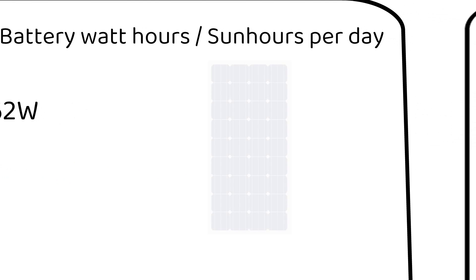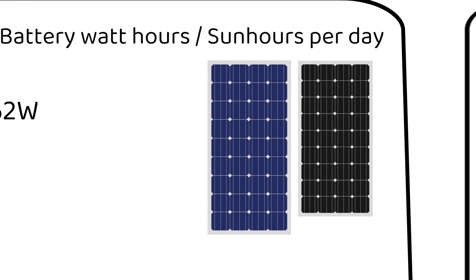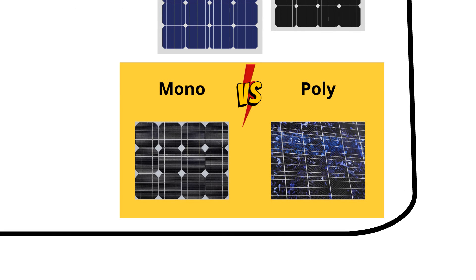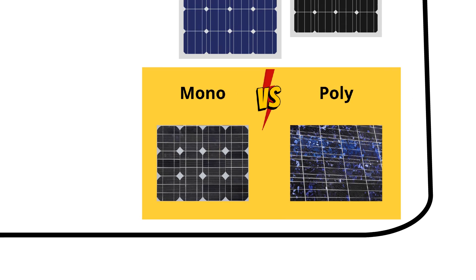The choice between polycrystalline and monocrystalline solar panels largely depends on space availability. Polycrystalline panels, being slightly larger but more affordable, are ideal if you have ample space. On the other hand, monocrystalline panels are recommended for limited spaces. For a deeper dive into this topic, watch my detailed video about comparing mono and poly panels.